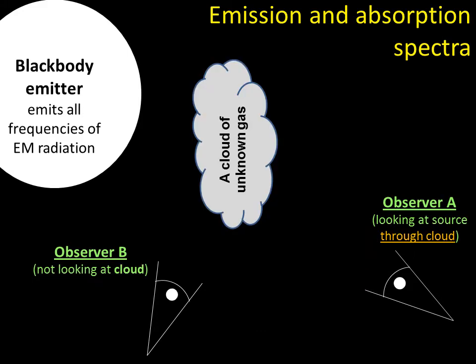Right, now, if we change it slightly, we put a cloud of unknown gas in the middle. So Observer B is now looking at the cloud, sorry, I should say now, not looking at the cloud. Observer B is looking at the cloud, and Observer A is looking through the cloud. So it's looking at the blackbody emitter still, but this time the cloud's in the way. Well, how does this change things?